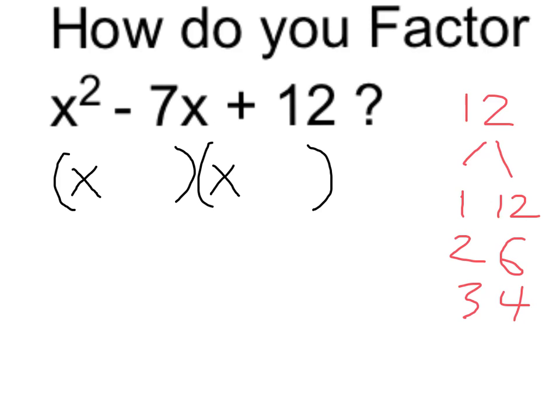But quickly I might notice that 3 and 4 is equal to 7, which means that negative 3 and negative 4 is going to be negative 7.